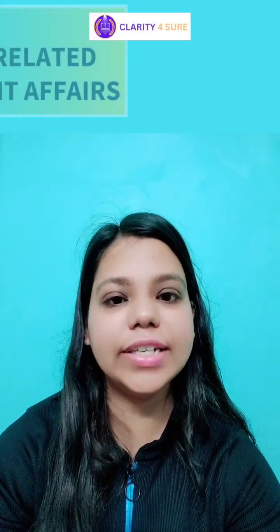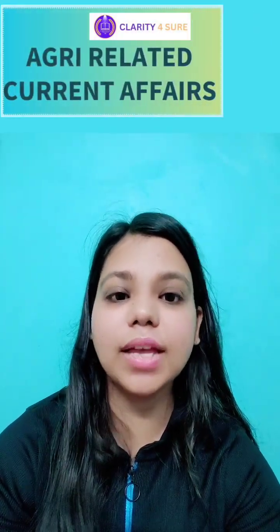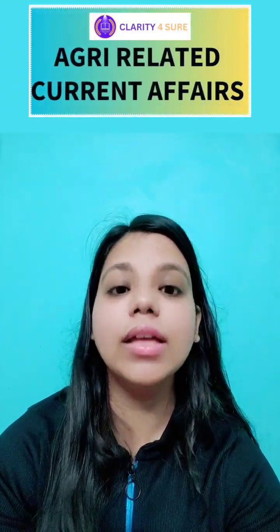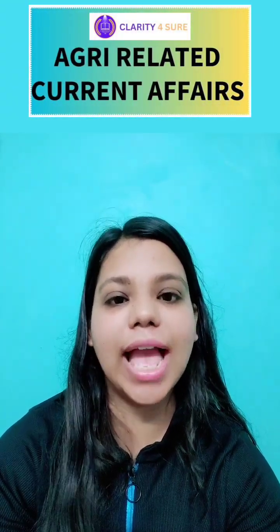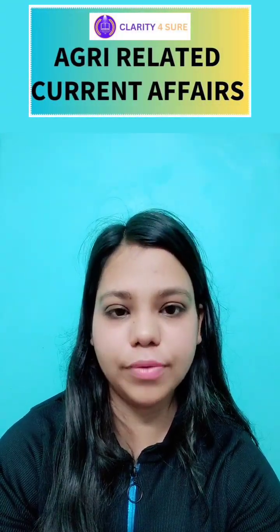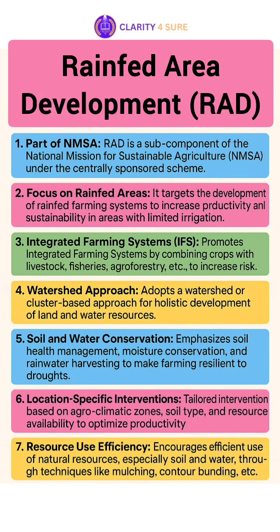Welcome to Agri-Related Current Affairs, a series by Agri-Clarity and Clarity for Sure. Today we are going to discuss Rainfed Area Development or RAD, a flagship component under the National Mission for Sustainable Agriculture.